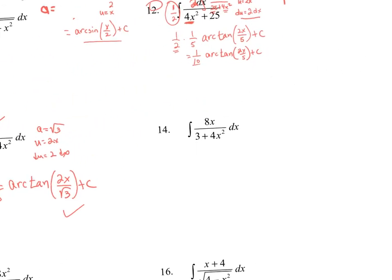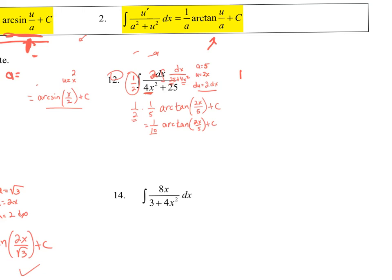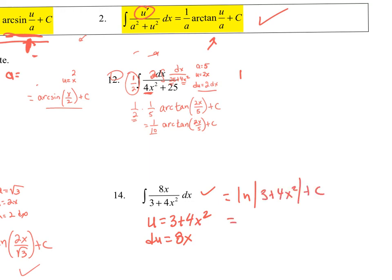Number 14: can I use the arc tangent formula here? No — because there's an x in the numerator. This is just a straight u substitution. Let u equal 3 plus 4x², and this is straightforward. The antiderivative is ln of (3 plus 4x²) plus C. The absolute value isn't strictly needed since the expression inside is always positive. Don't get tricked into using arc tangent when it's really just a u substitution.